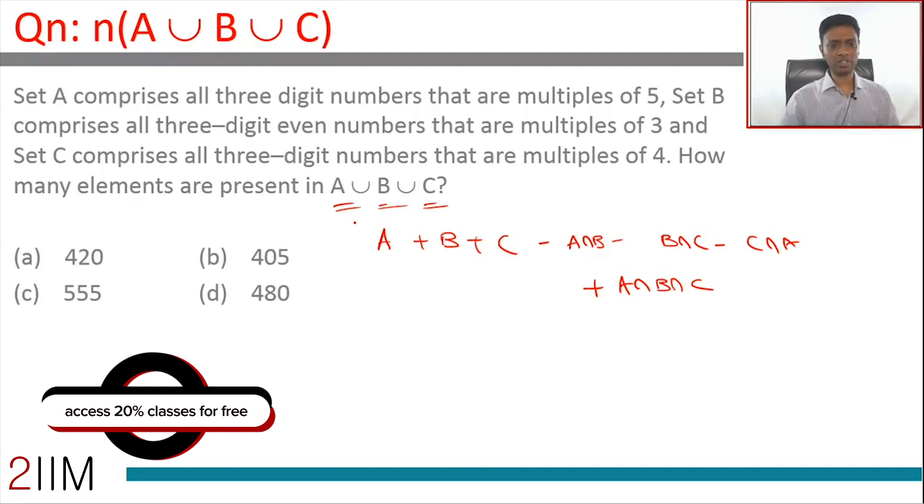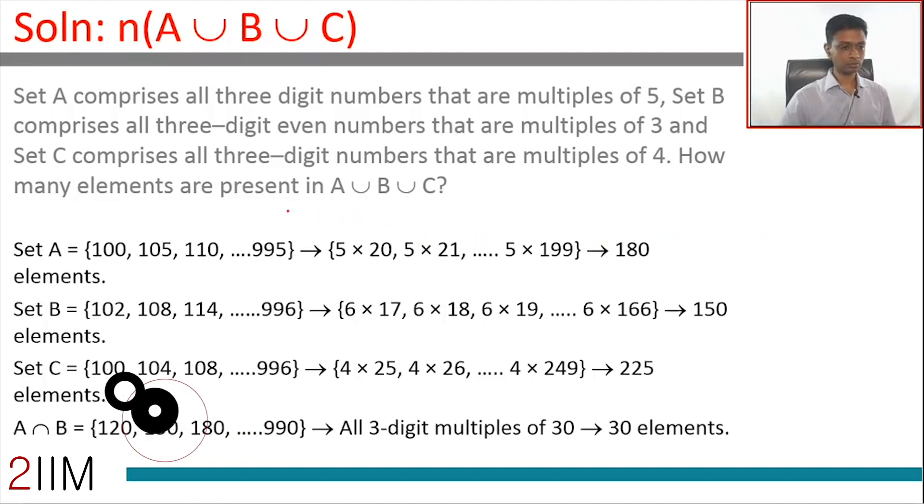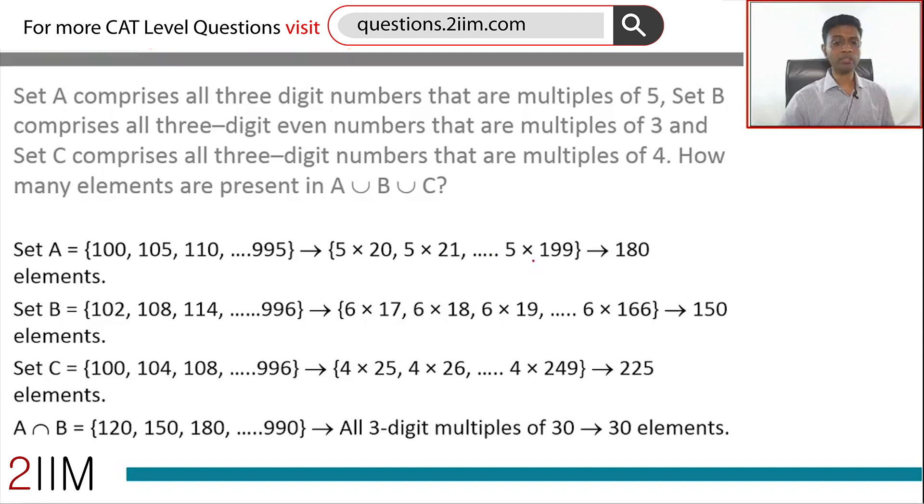The old-fashioned way: list things down, count them, and then plug in the formula. Set A comprises all three-digit numbers that are multiples of 5. So 100, 105, 110, all the way to 995. 5 into 20, 5 into 21, 5 into 22, all the way to 5 into 199. Or 180. The other way of doing this: in a set of 900 consecutive numbers, there will be 180 multiples of 5. 900 by 5 is 180.